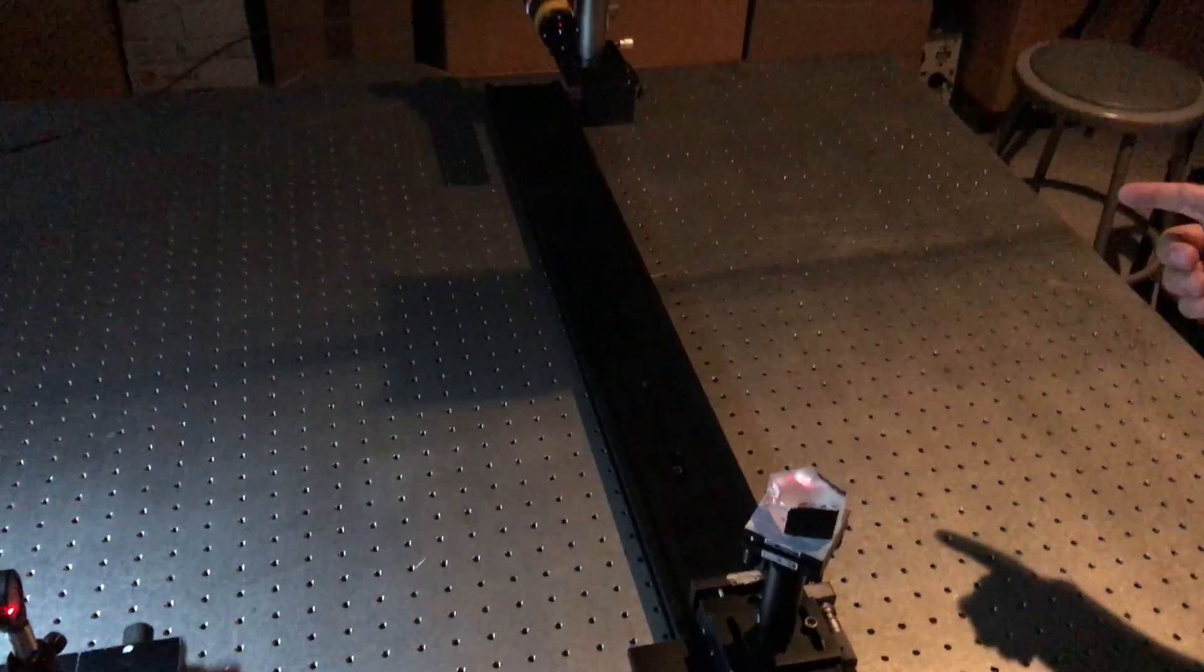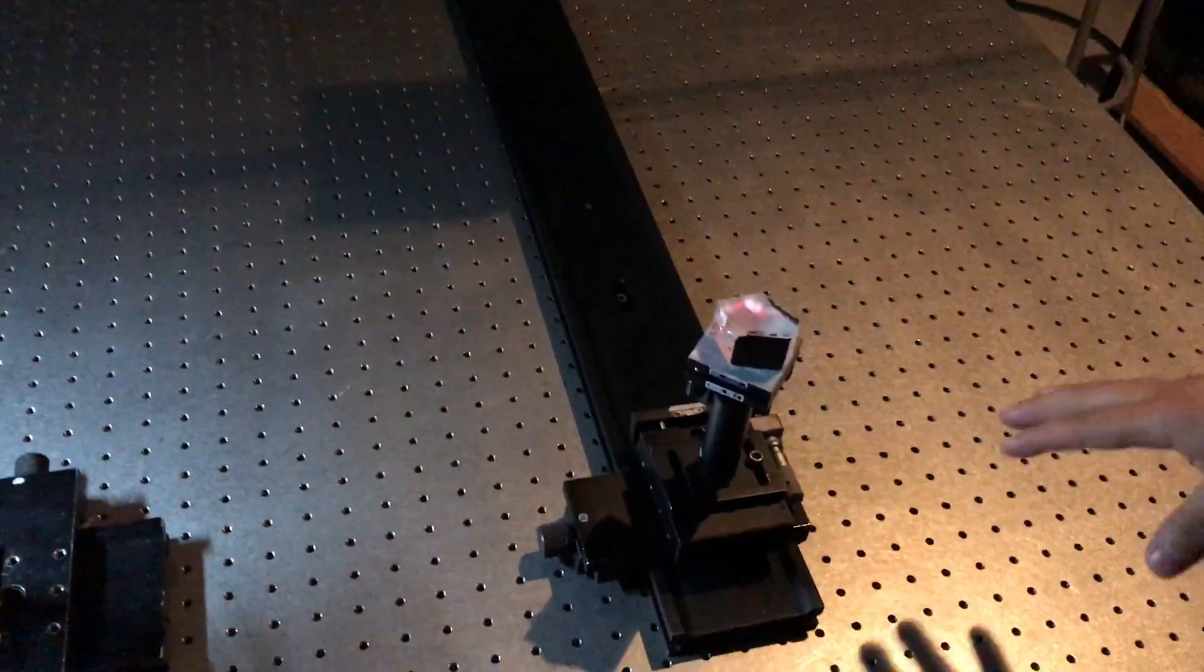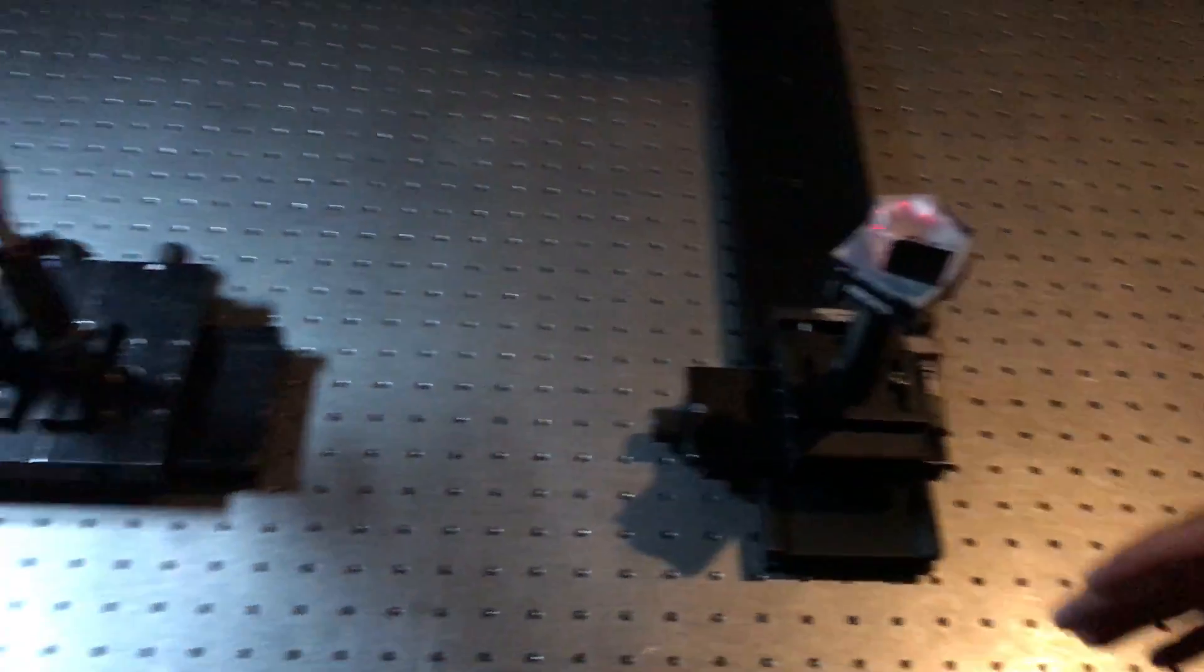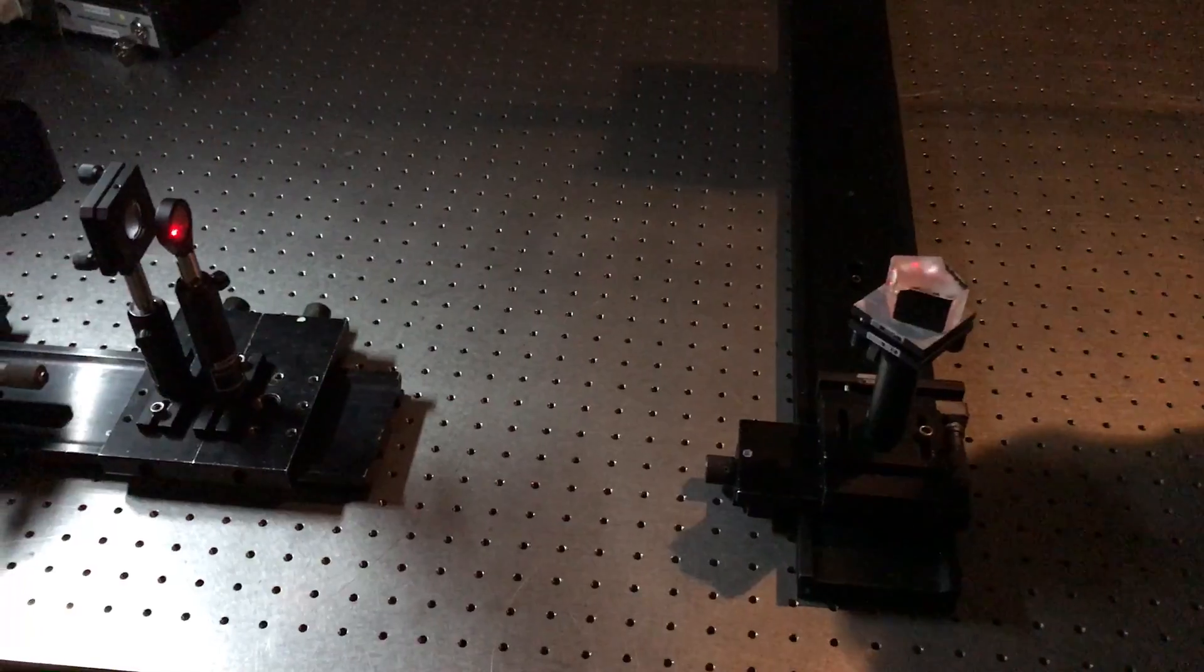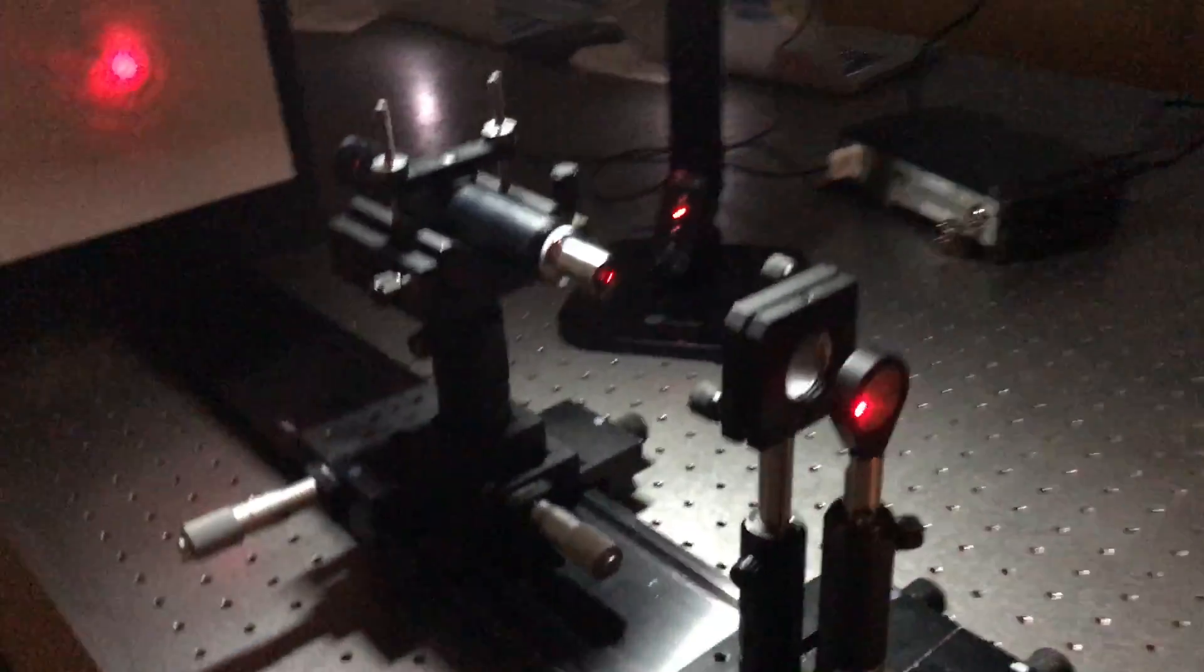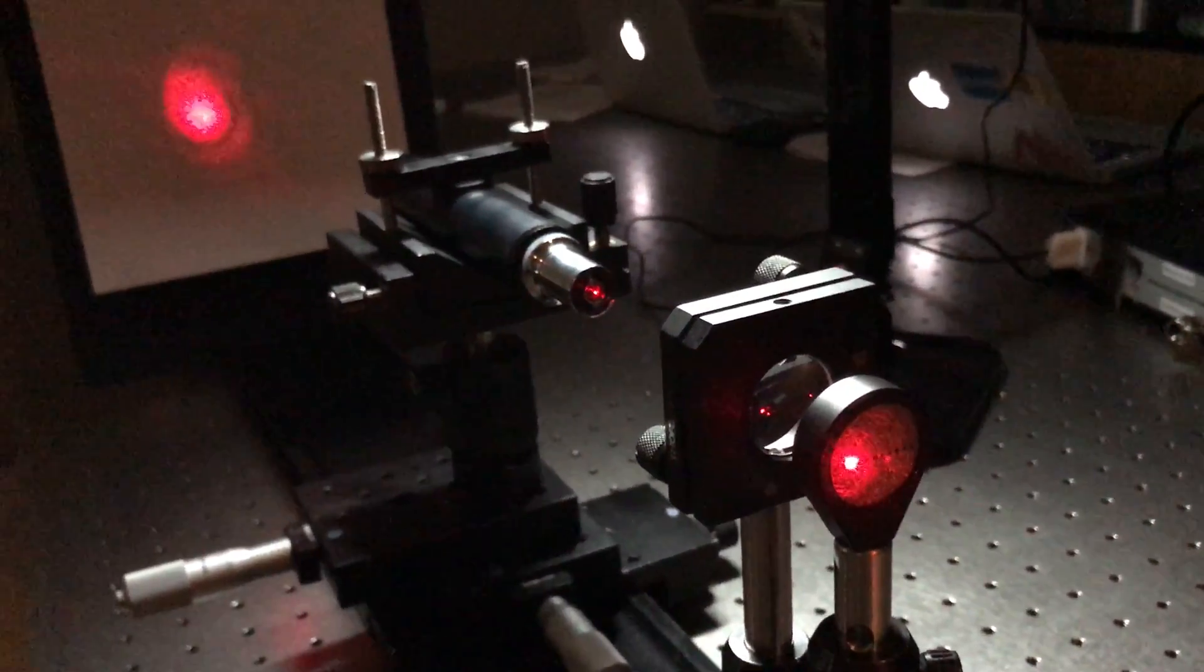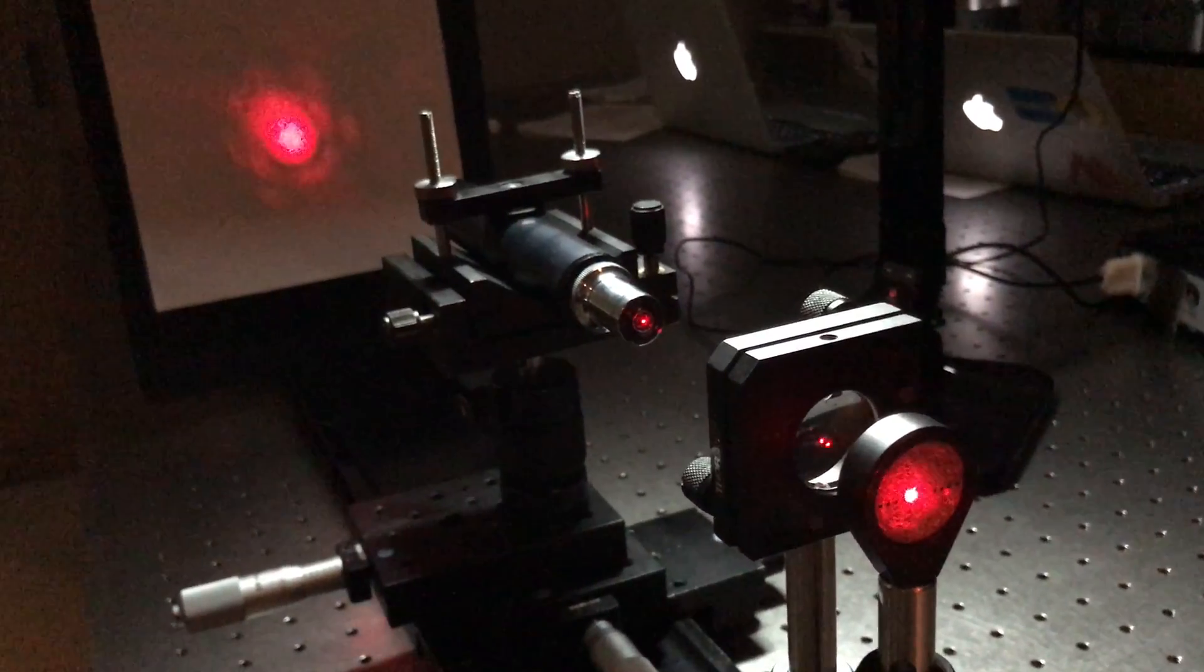We aligned the laser beam to this rail and then put a pentaprism on so that we could deviate the beam by 90 degrees. We also have it on a translation stage so that we can move across the lens at different pupil positions. We isolated these pupil positions by using a Hartmann mask.